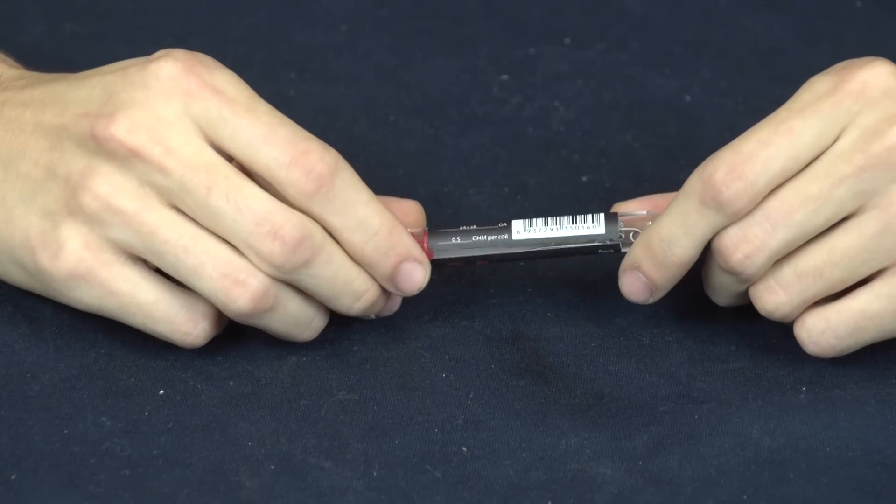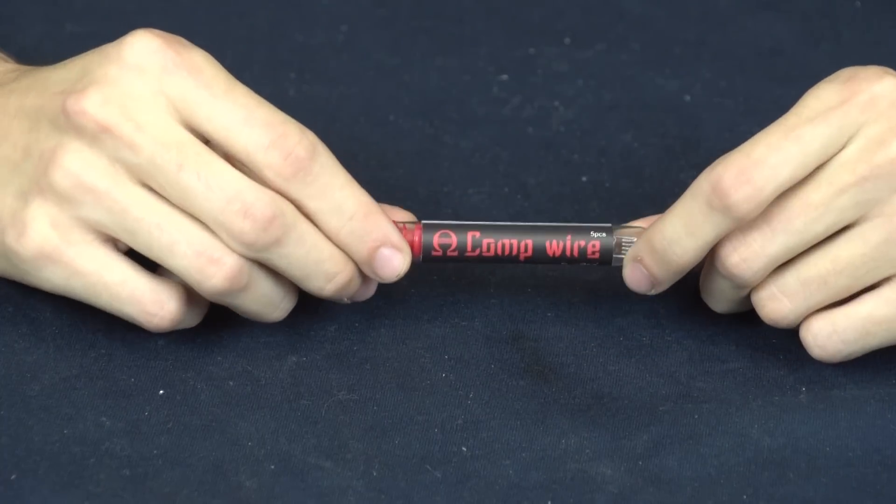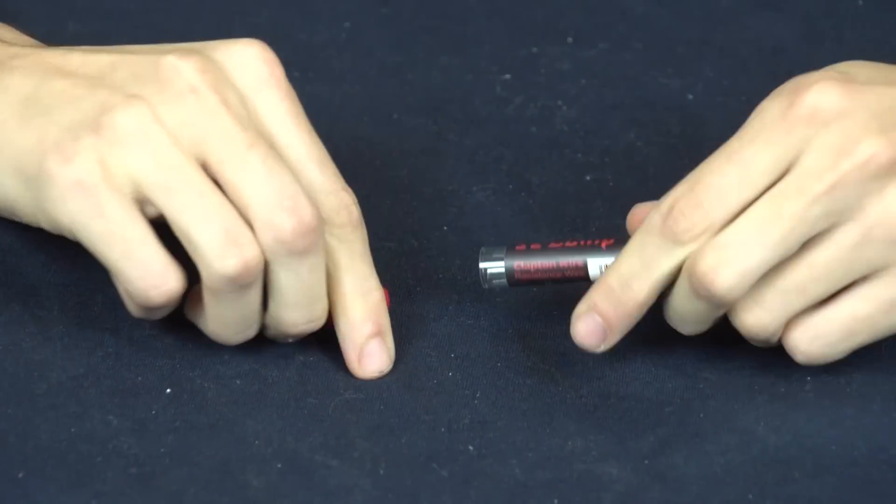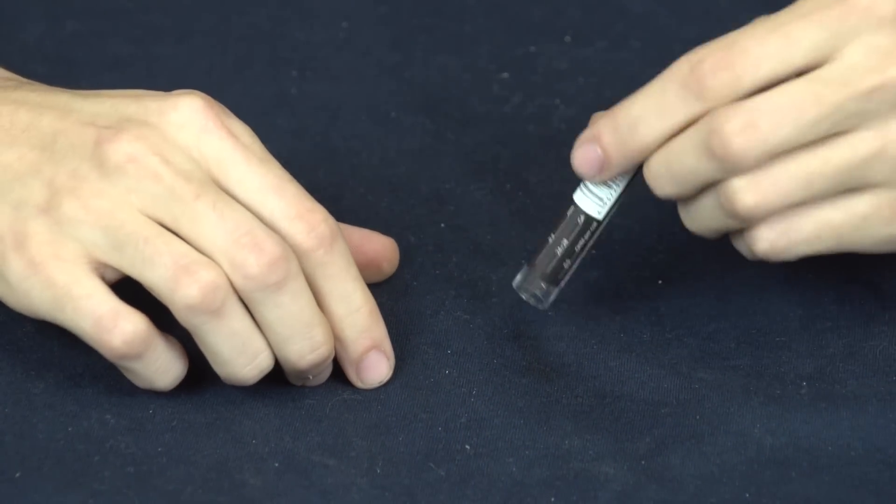So when you get your comp wire, it's going to come in this little tube. You're going to get five coils per tube. You open it up. There's going to be five coils that are pre-built in there.